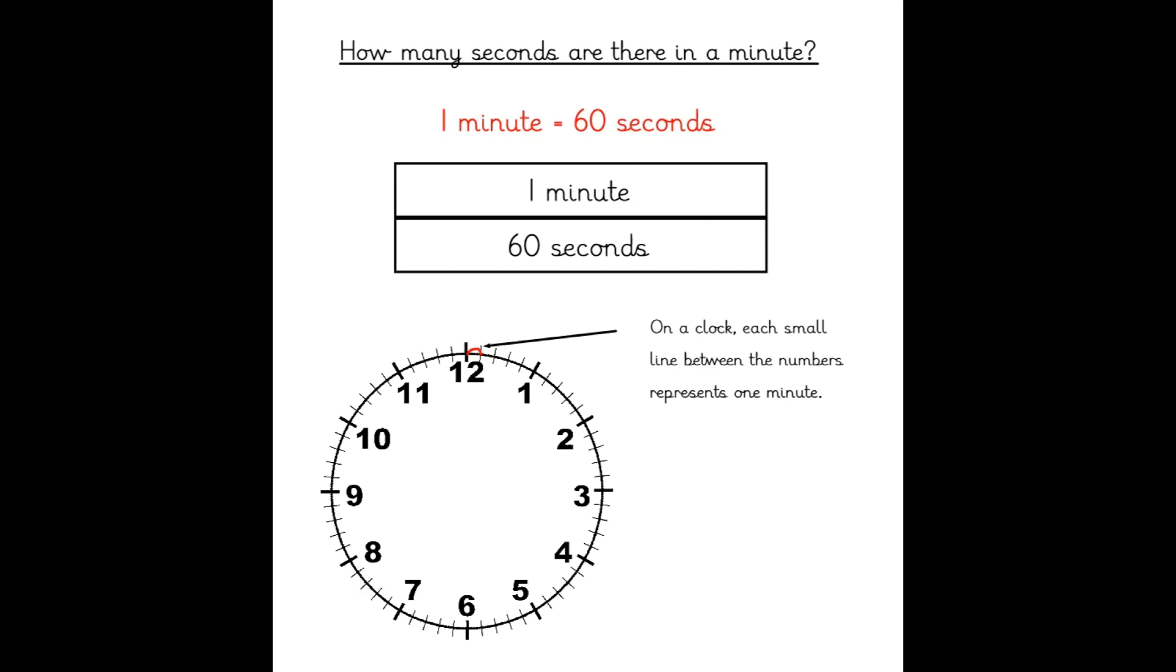On a clock face, you can see that each small line between the larger numbers represents one minute.